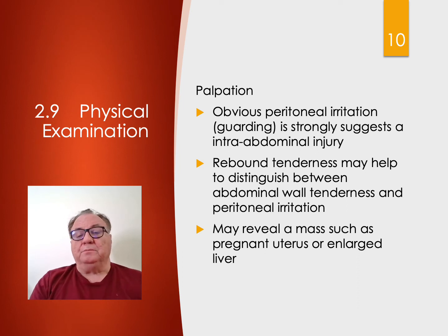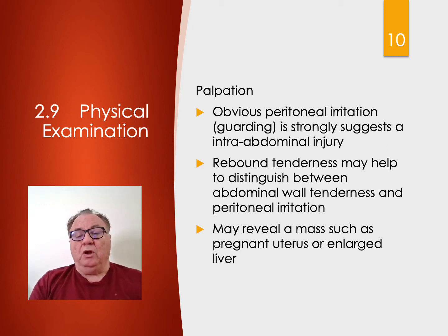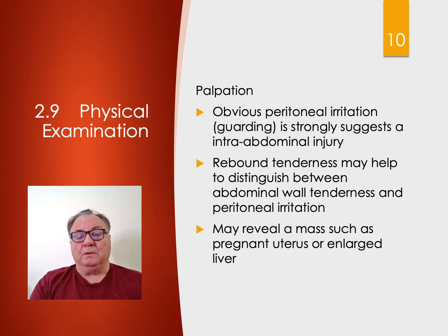Palpation. Obvious peritoneal irritation and guarding strongly suggests an intra-abdominal injury. Rebound tenderness may help to distinguish between abdominal wall tenderness and intra-abdominal peritoneal irritation. Look for masses such as a pregnant uterus or an enlarged liver.